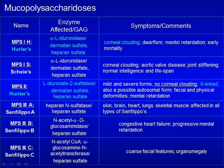Hunter syndrome has mild and severe forms and is an X-linked disorder. Patients with Hunter syndrome have facial and physical deformities and mental retardation, but without corneal clouding. Patients with Hurler syndrome have corneal clouding, dwarfism, and mental retardation. To differentiate Hunter vs. Hurler syndrome, corneal clouding is a key symptom.